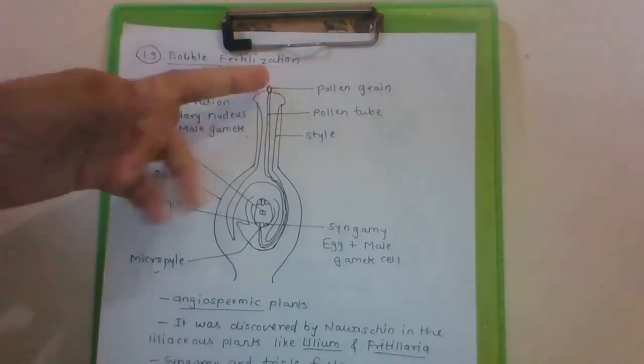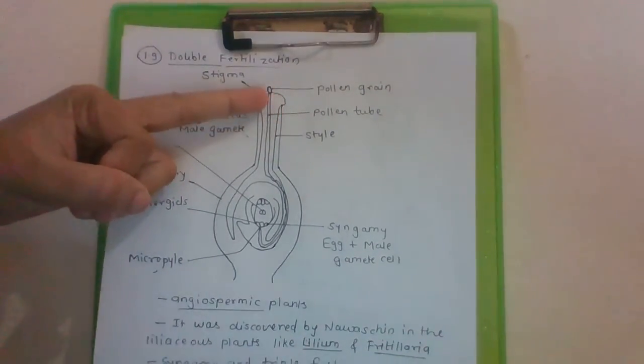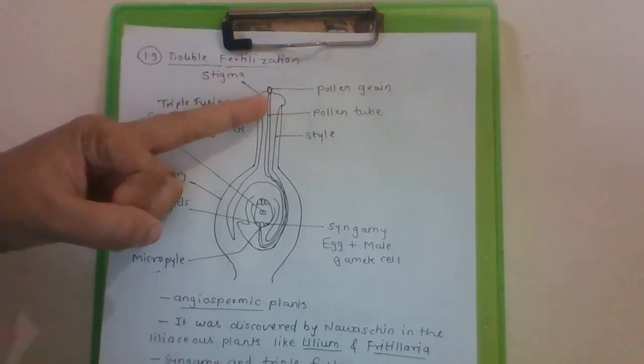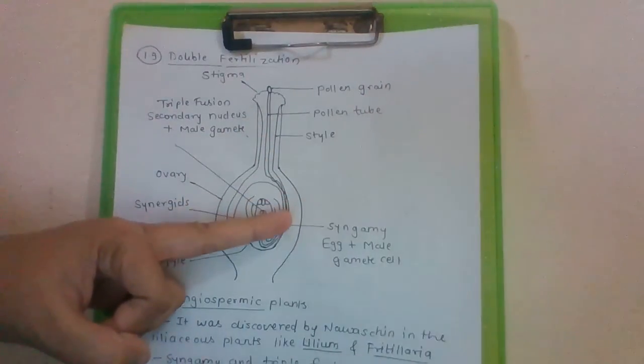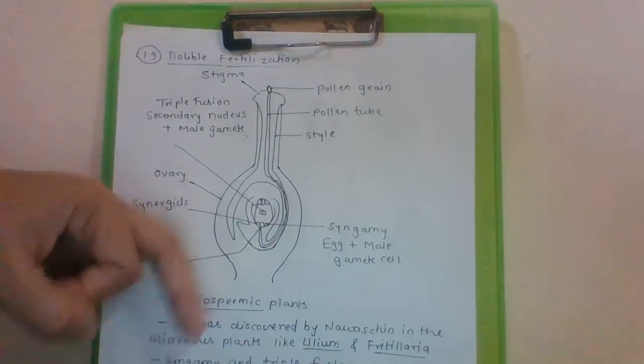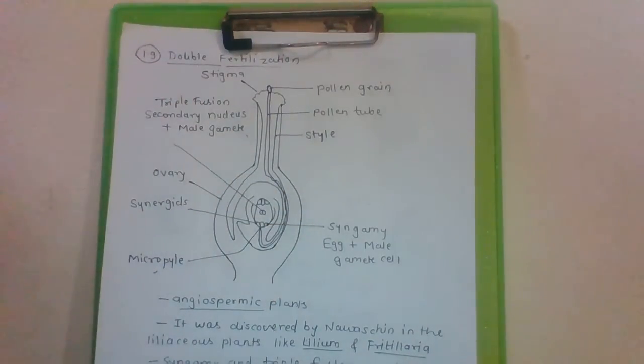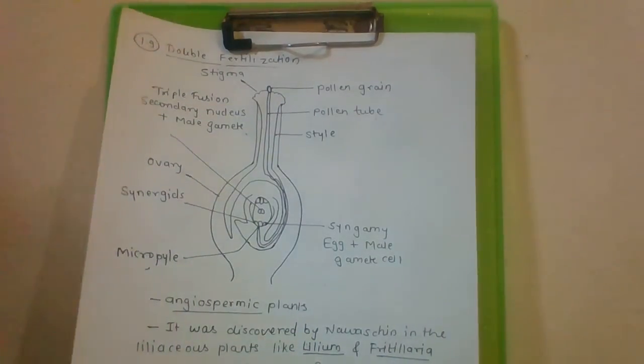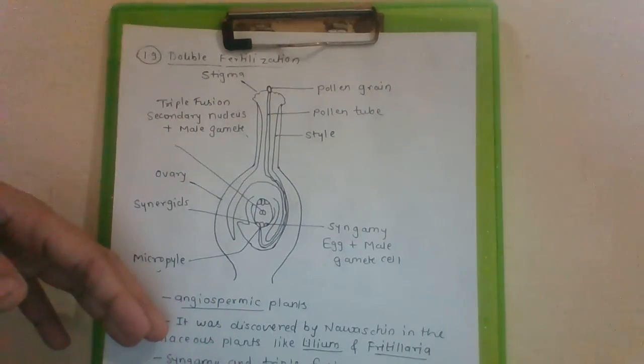You have to remember pollen grain. This is covering of stigma. Pollen grain comes to stigma. Then through pollen tube male gametes are reaching to the ovule where triple fusion and syngamy processes are carried out. Both male gametes are present in the development process, so the process is called double fertilization.